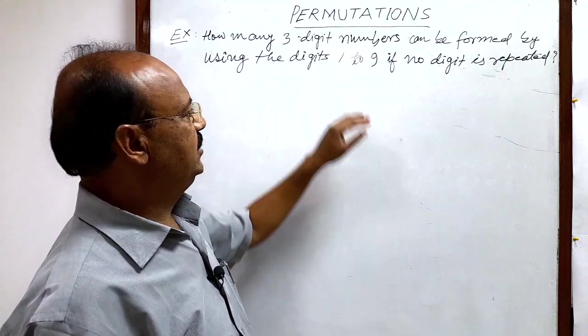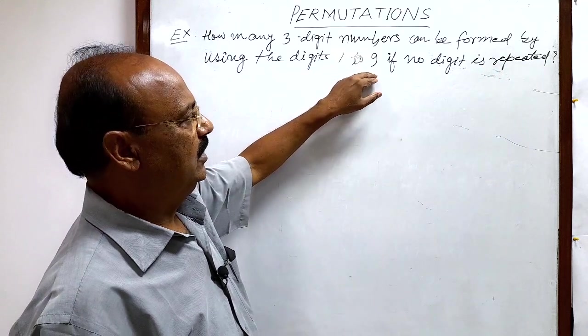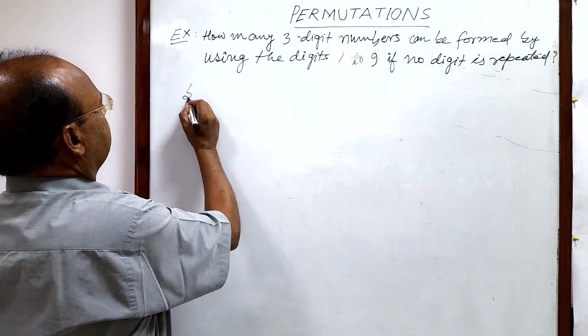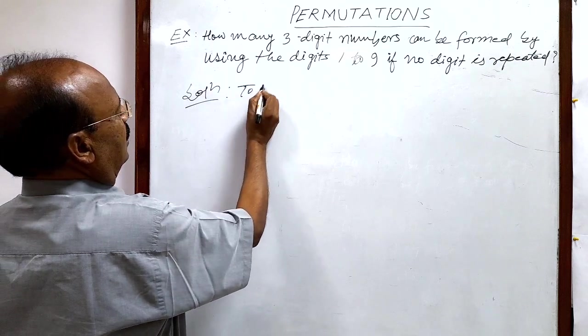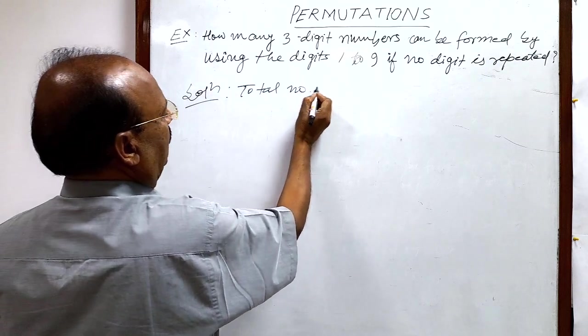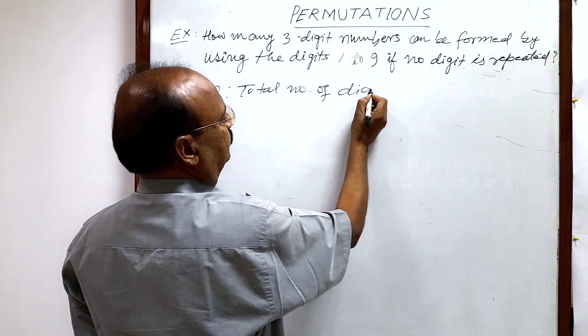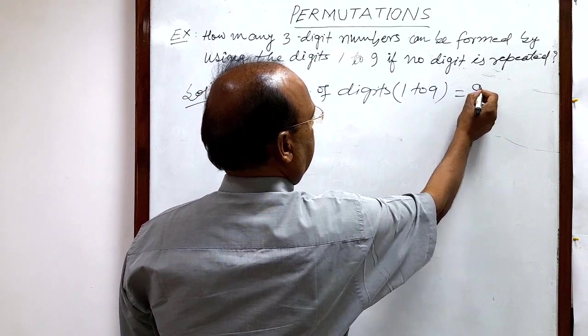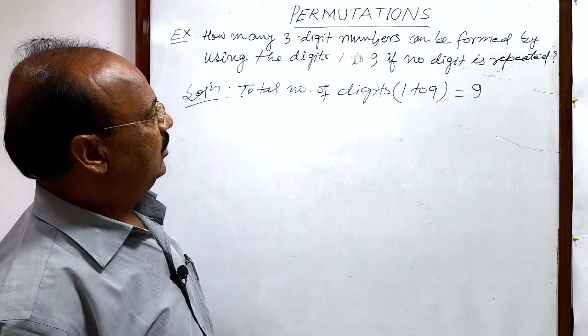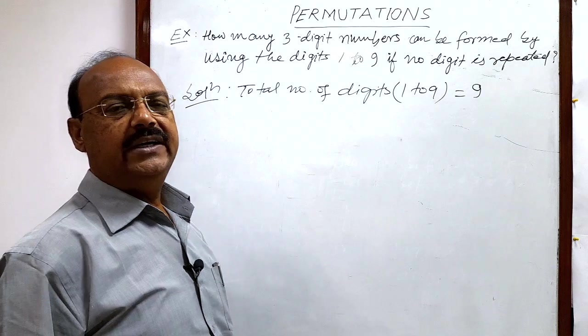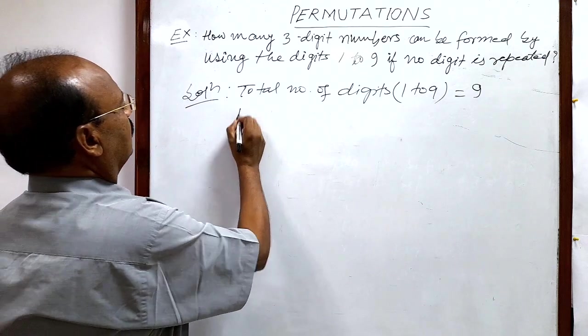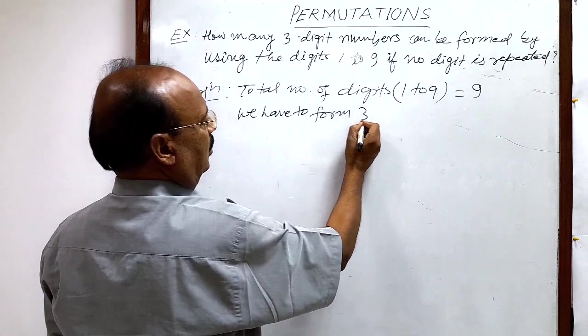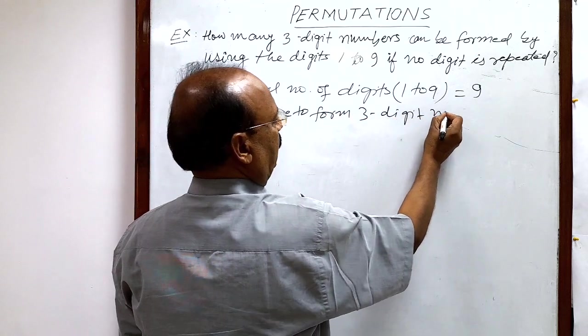We have to use the digits from 1 to 9, so the total number of digits is 9. Let us see the solution. The total number of digits from 1 to 9 equals 9, and we have to form three-digit numbers.